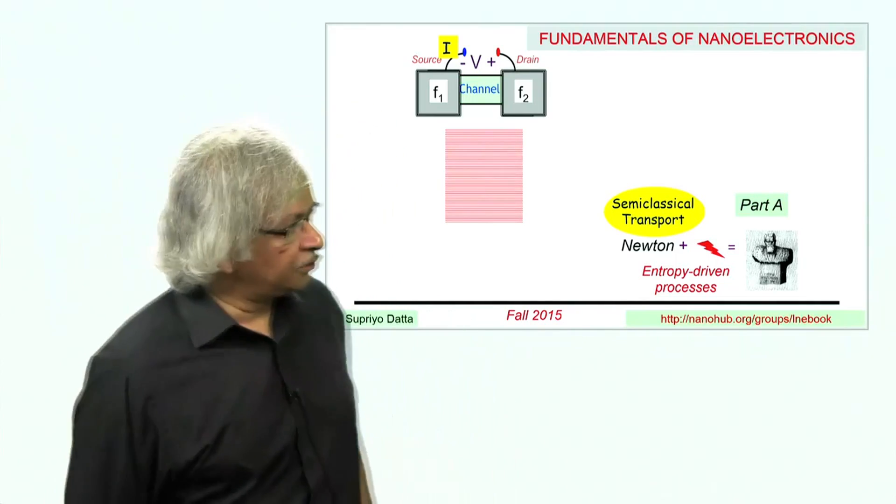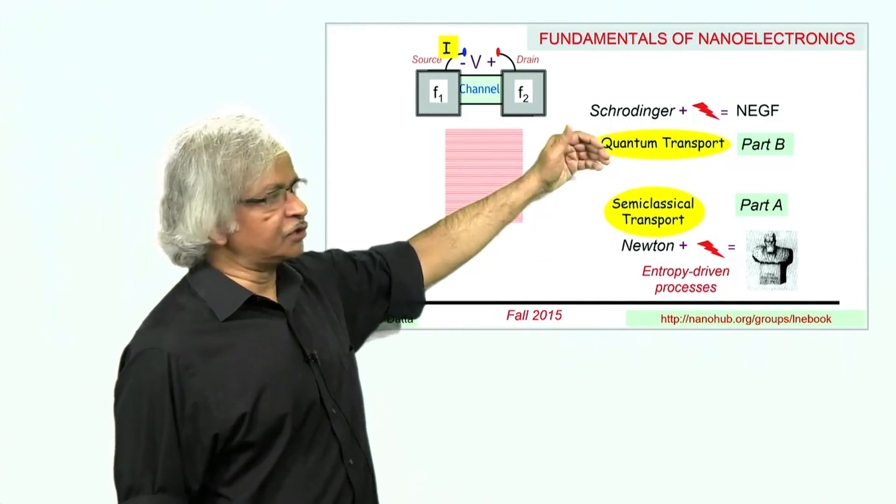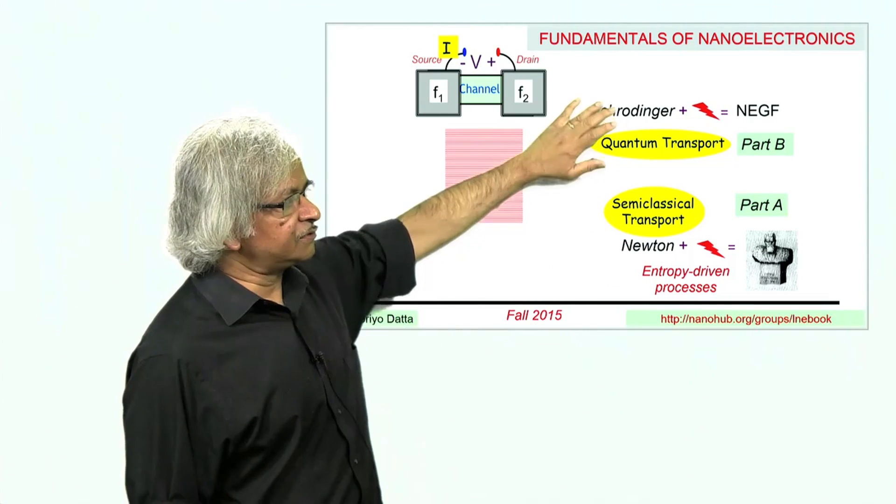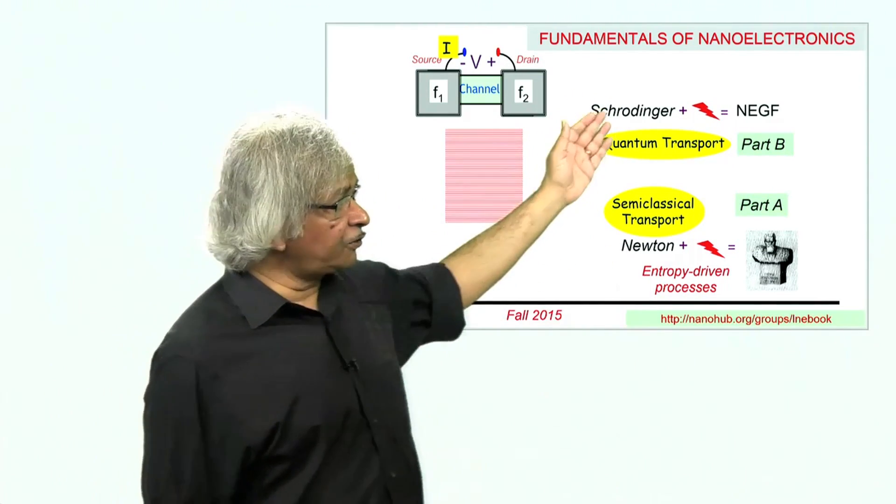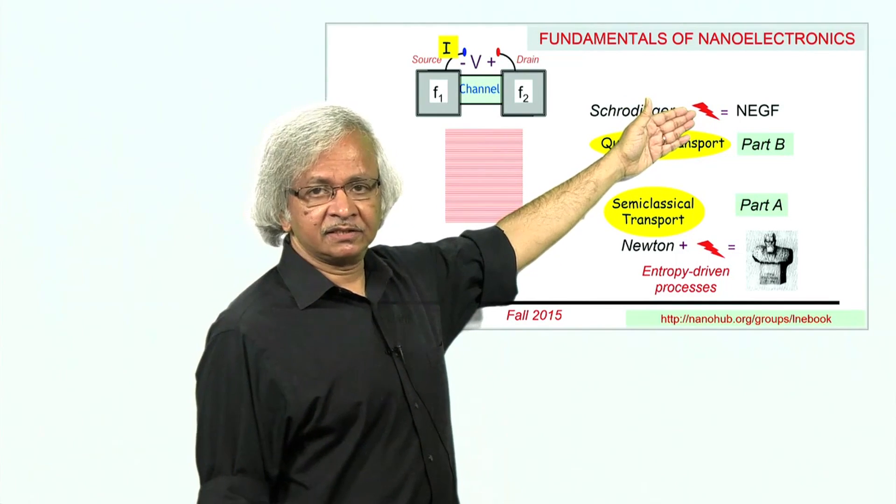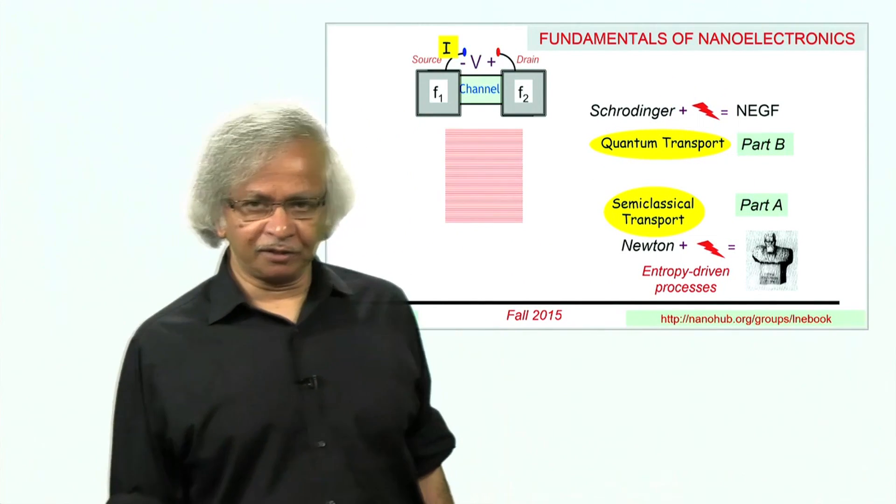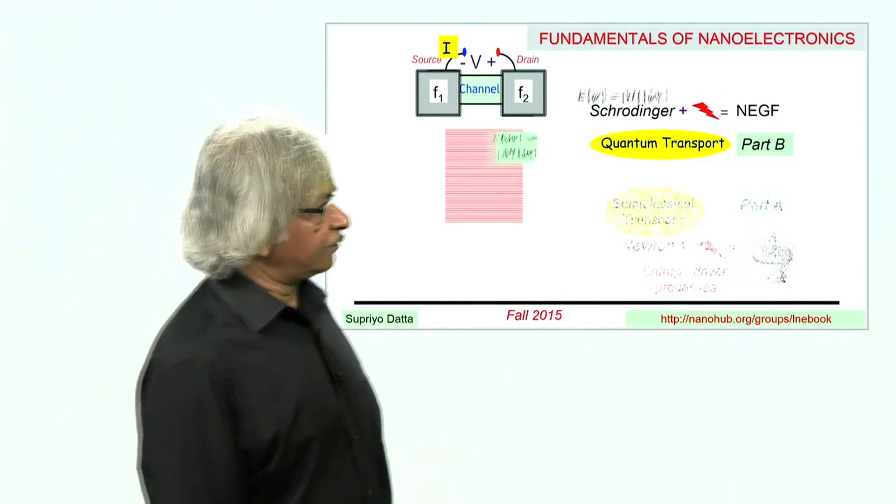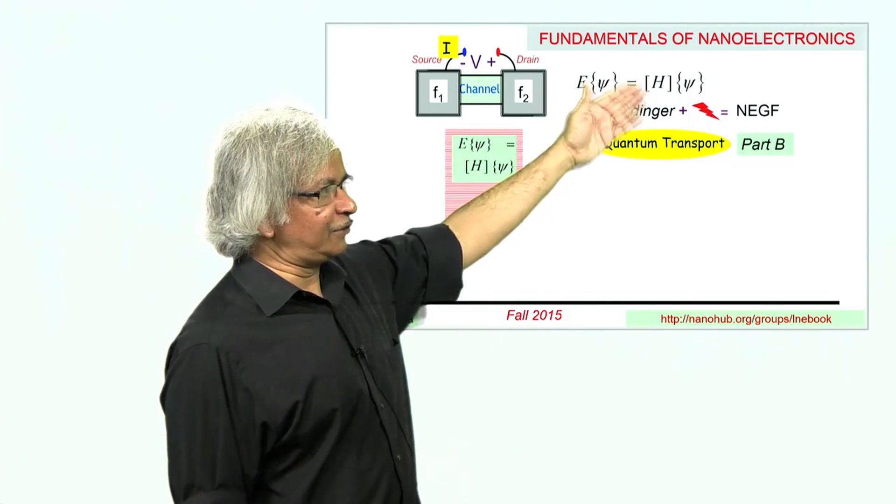We'll continue this in Part B with quantum transport. As you might expect, for quantum transport, Newton's laws get replaced by the Schrödinger equation. But you still have to add entropy-driven processes. When you add that, you get the non-equilibrium Green function method, or NEGF. In the first unit, we'll talk about the Schrödinger equation—E|ψ⟩ = H|ψ⟩.